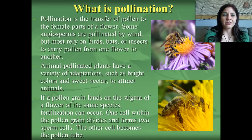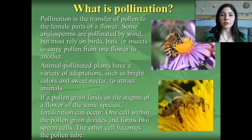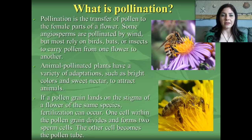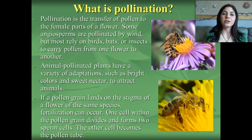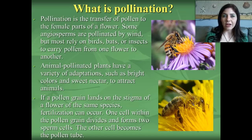Pollination is the transfer of pollen to the female flower parts. Some angiosperms are pollinated by the wind, but most rely on birds, bats, insects, and humans to pollinate one flower from another. Animal-pollinated plants have adaptations to attract insects or other animals, such as bright petals or sweet nectar. If a pollen grain lands on the sticky stigma of a flower of the same species, it can travel down the style into the ovary and fertilization can occur.